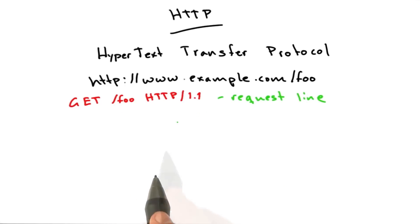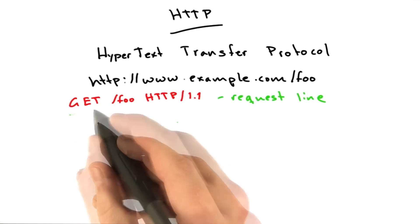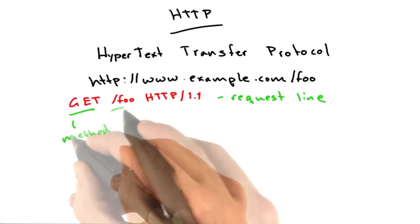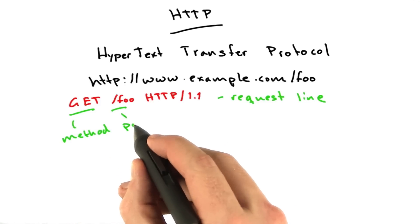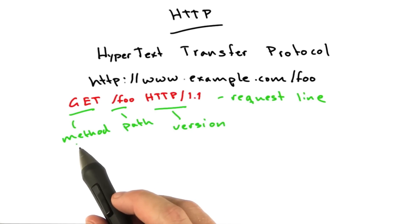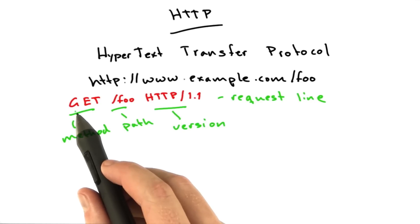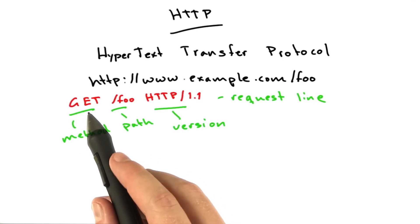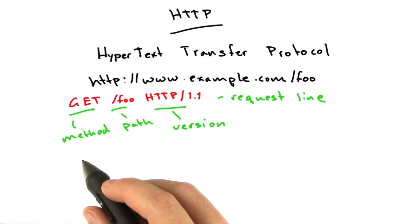The request line has three main parts. First is the method. Next is the path. And finally is the version. The method is what type of request you're making to the server. The most common method by far is GET, and this is how you get a document from the server. Other popular methods are GET and POST. There are other ones, but these are the ones we're going to use in the class.